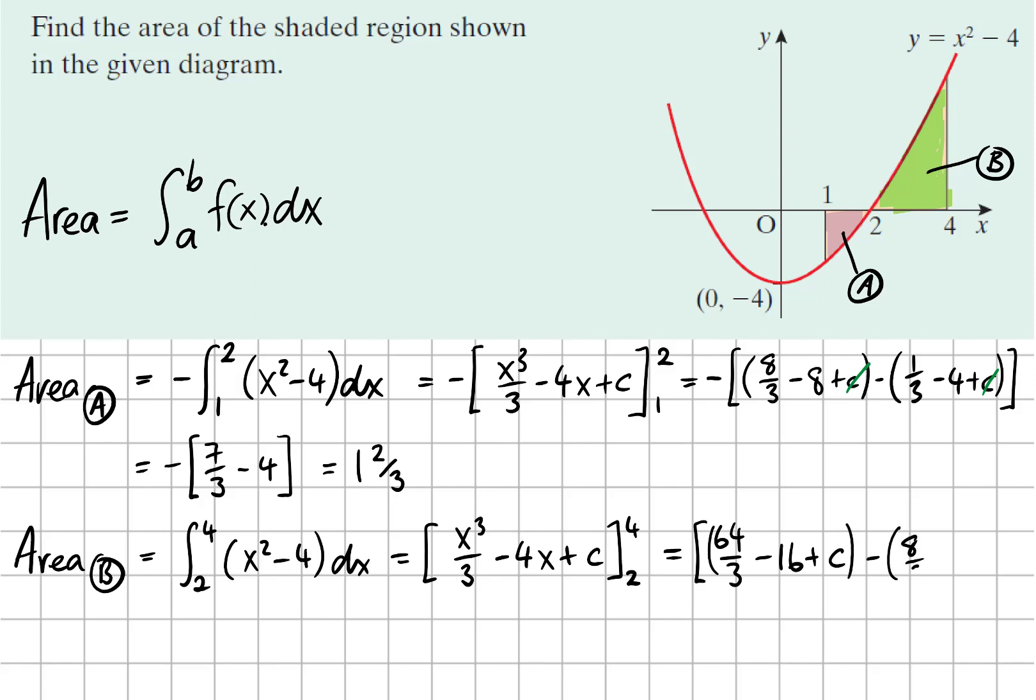Evaluating this, you could use a calculator, but we have 64/3 - 8/3, that's 56/3, and we have -16 + 8 which is -8. So this is 10 and 2/3.